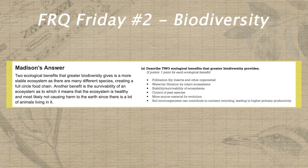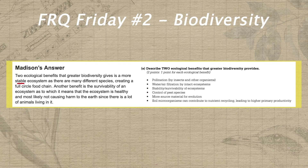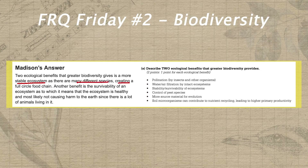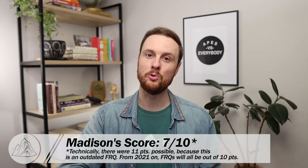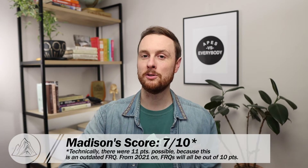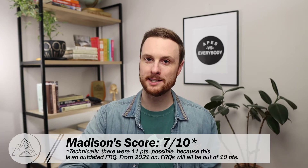Finally, in part E, Madison earns the ecosystem stability point, but her second answer of survivability is too closely connected to the stability point, as we can see from the rubric. Overall in this FRQ, Madison earned a seven out of ten, which is a phenomenal score. It puts her in great shape to potentially earn a five on the exam in May, as long as she pairs that with similarly strong FRQs and a multiple choice score in the 80%.